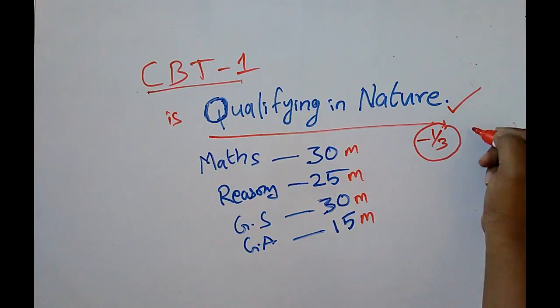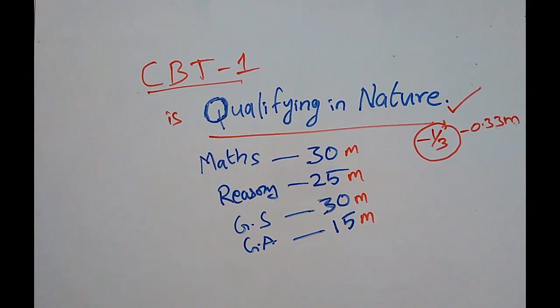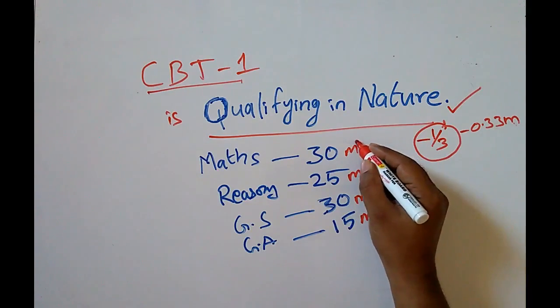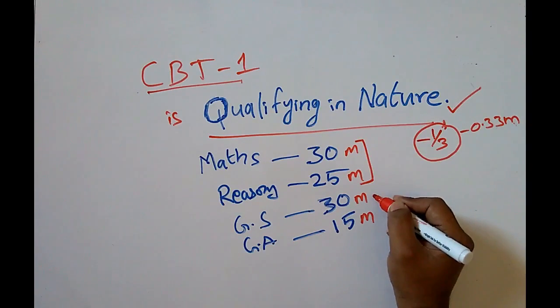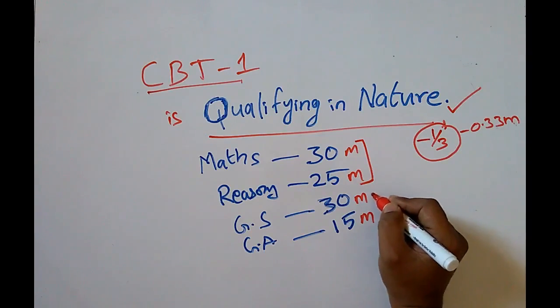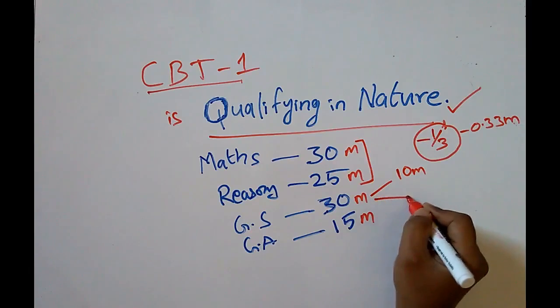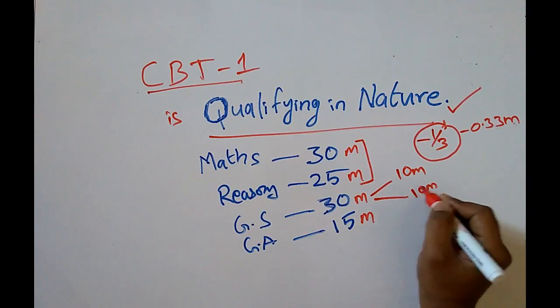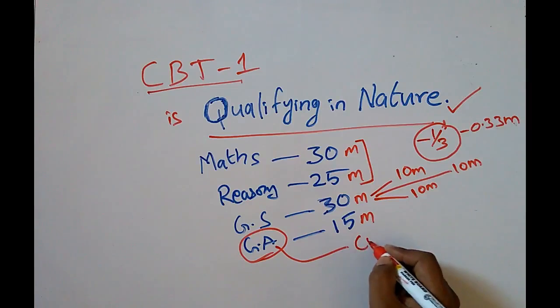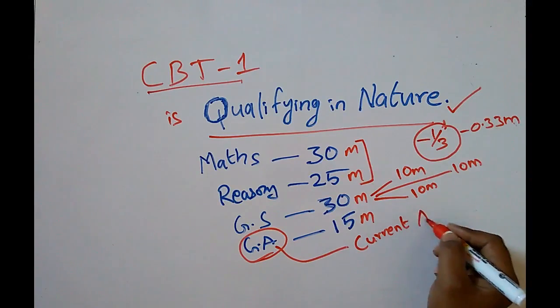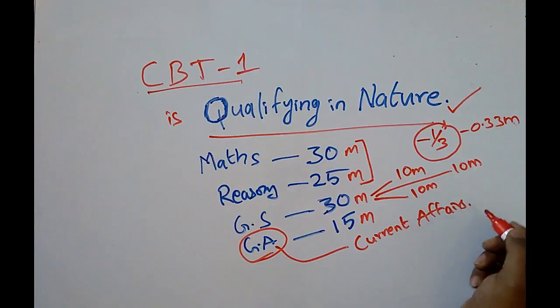All you have to do is attempt most of the math and reasoning questions and you have to be thorough with physics and chemistry. Physics you will get 10 marks, chemistry 10 marks, and biology another 10 marks. In general awareness, most of the questions will be related to current affairs. Almost in 15 questions you may get 8 questions on current affairs.